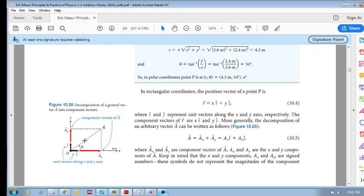If you've got a vector A and you want to decompose it into its components, there's your vector. You draw a line straight down parallel to the y axis until it cuts the x axis. There's your Ax, your x component, and then there you have your y component. If you want to further decompose this, you get Ax i plus Ay j.